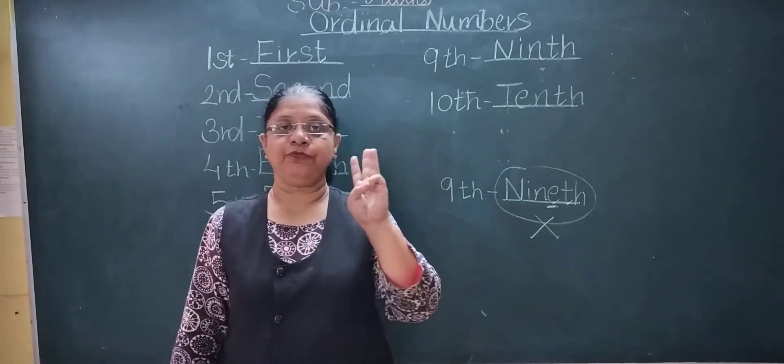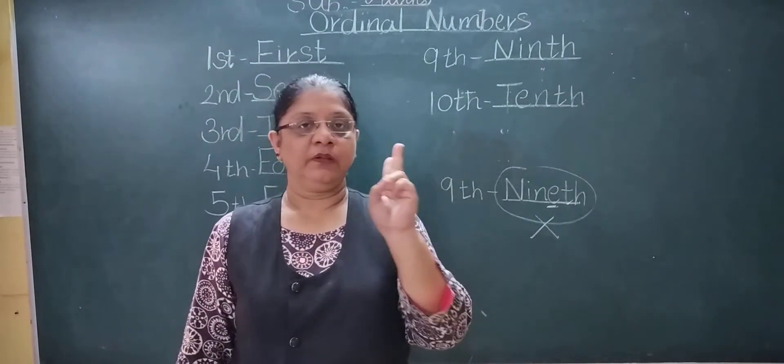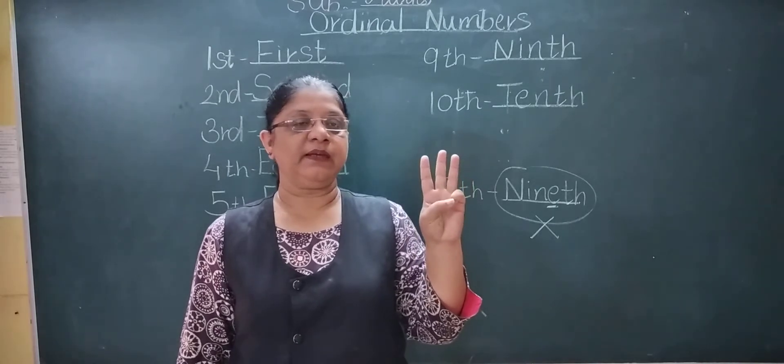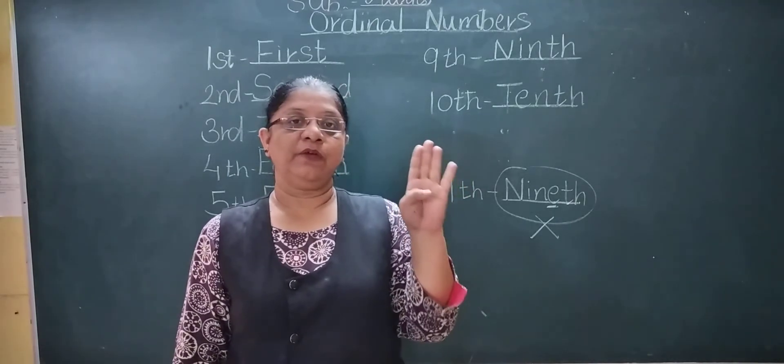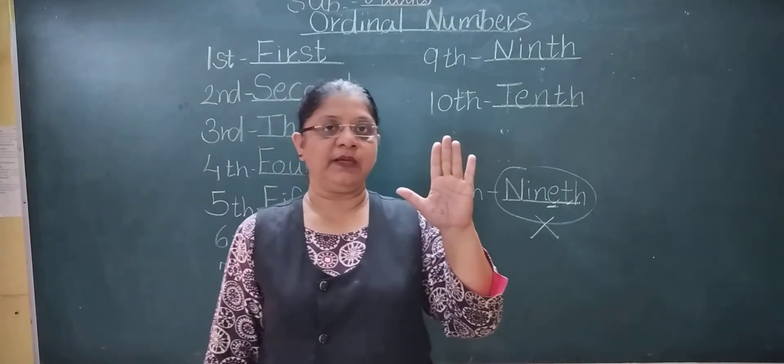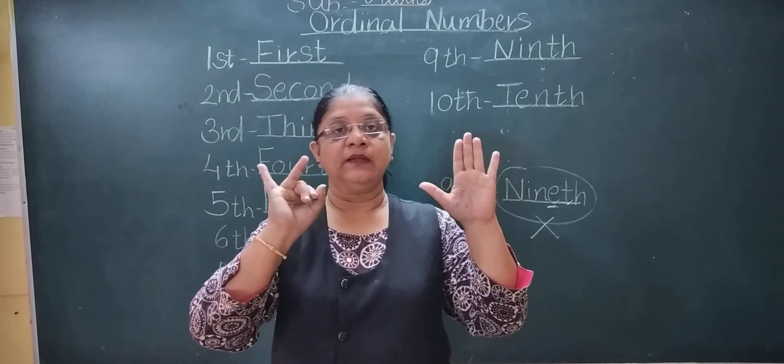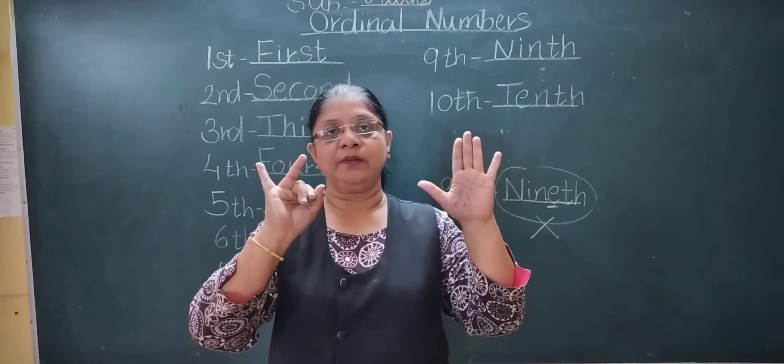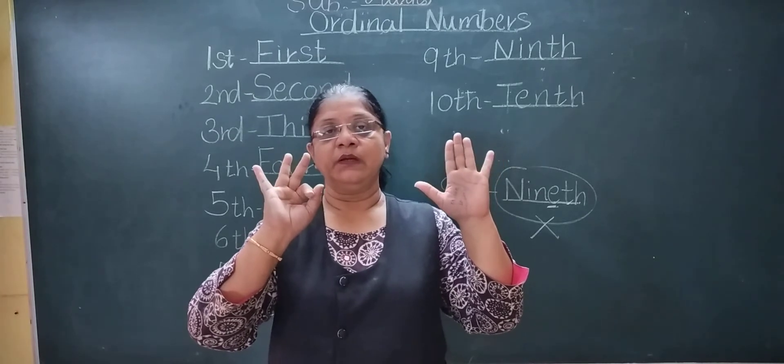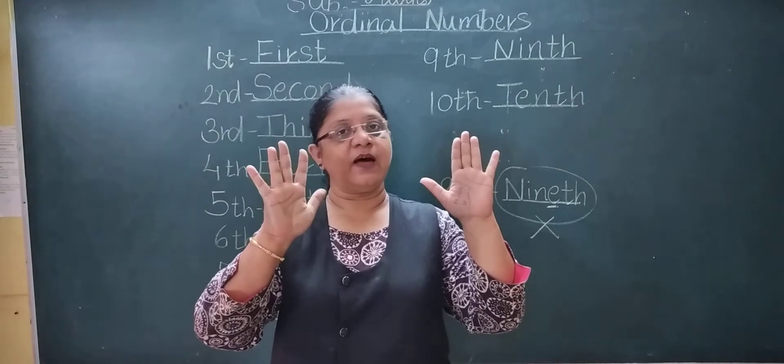Now table of three. Three ones are three, three twos are six, three threes are nine, three fours are twelve, three fives are fifteen, three sixes are eighteen, three sevens are twenty-one, three eights are twenty-four, three nines are twenty-seven, three tens are thirty.